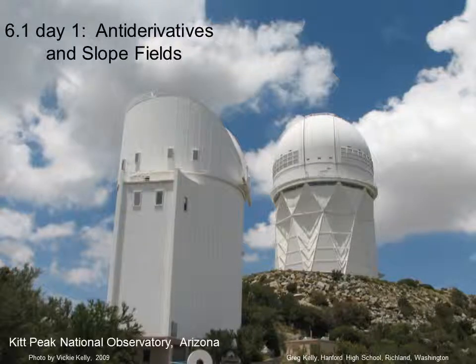Lecture 6.1, Day 1, Antiderivatives and Slope Fields. This is a picture of two telescopes at Kitt Peak National Observatory in Arizona. To give you a sense of scale, if you look right here, this is an awning above the door, and then there's an elevator to the top.